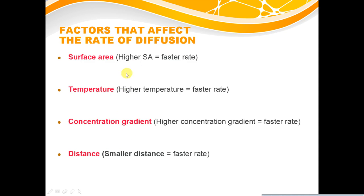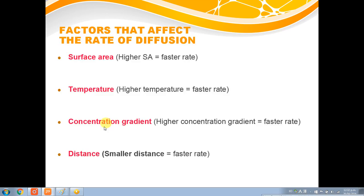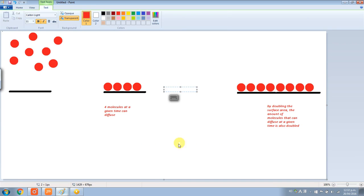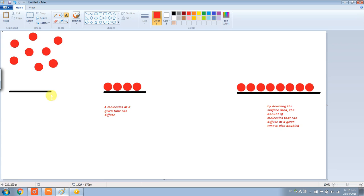Surface area: the higher the area at which diffusion can occur, the faster the rate of diffusion. To diagrammatically represent this, I've drawn a little diagram here. If you take a look at this black line, this represents the area at which these red molecules are diffusing through to the lower compartment.